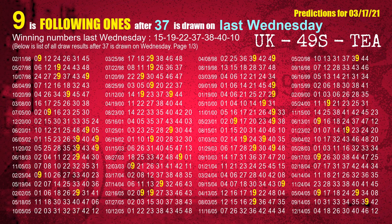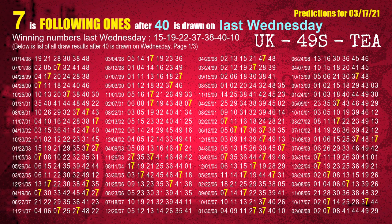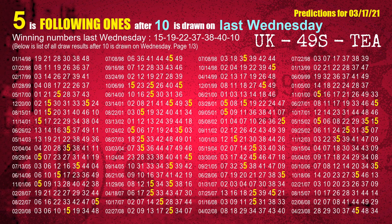The fourth winning number last Wednesday is 37. The most frequently following units digit is 9 when 37 is the winning number on last Wednesday. The fifth winning number last Wednesday is 38. The most frequently following units digit is 5 when 38 is the winning number on last Wednesday. The sixth winning number last Wednesday is 40. The most frequently following units digit is 7 when 40 is the winning number on last Wednesday. The booster winning number last Wednesday is 10. The most frequently following units digit is 5 when 10 is the winning number on last Wednesday.